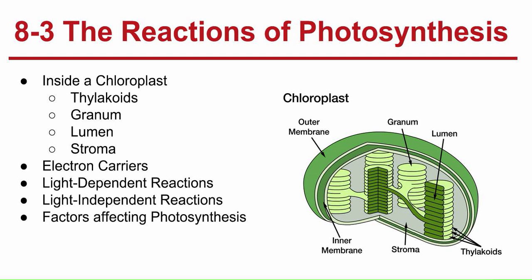8-3, the reactions of photosynthesis. Inside a chloroplast. We briefly talked about chloroplasts in Chapter 7, but here's a more in-depth explanation. The thylakoids are the sac-like photosynthetic membranes. The granum is a stack of thylakoids. Proteins in the thylakoid membrane organize chlorophyll and other pigments into clusters known as photosystems. These photosystems are the light-collecting units of the chloroplast. Also in the chloroplast, we have the stroma and the lumen. The stroma is outside of the thylakoids and the lumen is inside the thylakoids.